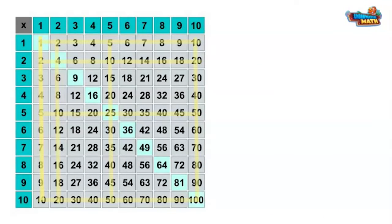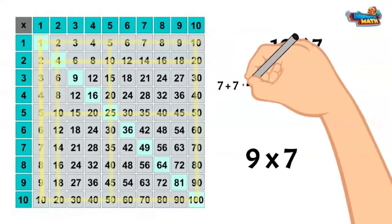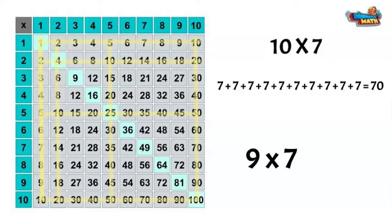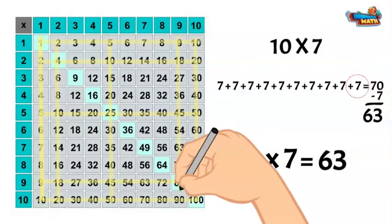If nine facts are hard to remember, use the ten facts to help. Let's take nine times seven. If you can't remember, multiply ten times seven. This gives us an answer of seventy. When multiplying by ten instead of nine we added an extra group of seven. To determine the product of nine times seven we take away seven from the product of ten times seven to get the answer sixty-three. Nine times seven equals sixty-three. Highlight the next row and column.